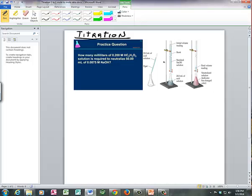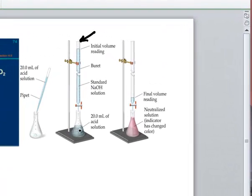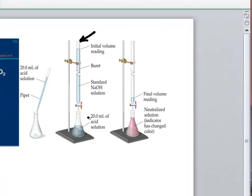Now the standard always goes in the volumetric burett, this device right here, so that we can keep very careful track of how much volume we actually dispense into what's being titrated down here in the Erlenmeyer flask.